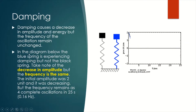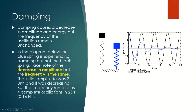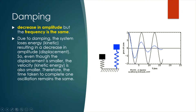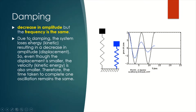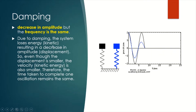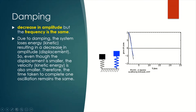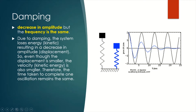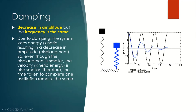In damping, amplitude decreases but frequency remains unchanged. Why? Because in damping the system loses energy — as seen from the video, the kinetic energy decreases — resulting in a decrease in amplitude. So even though the displacement is smaller, the velocity and kinetic energy are also smaller. Therefore, the time taken to complete one complete oscillation remains the same.